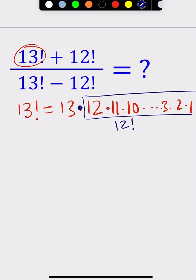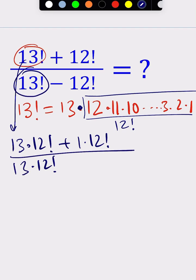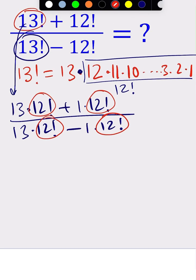Factorials have this interesting property. So now we can write 13 factorial as 13 times 12 factorial, and 12 factorial as 1 times 12 factorial. And now 12 factorial is a common factor, so we can factor it out.